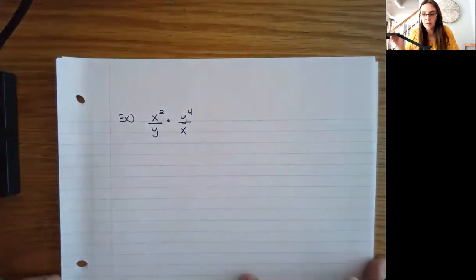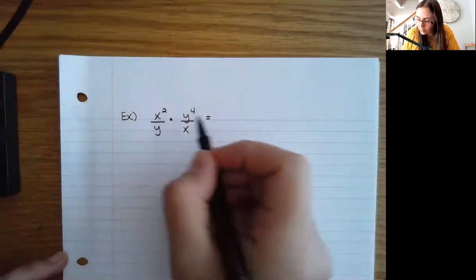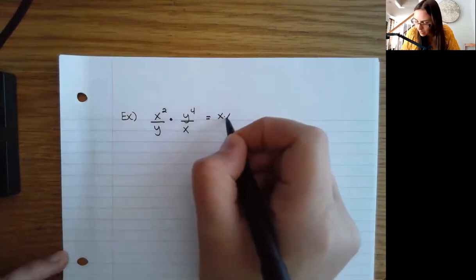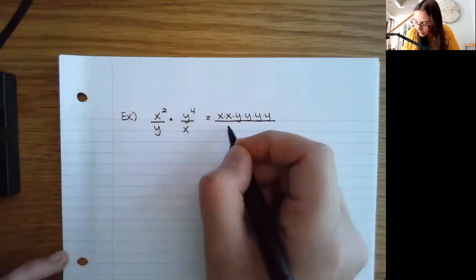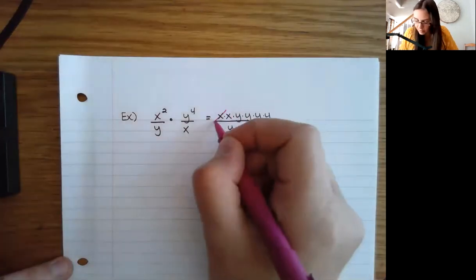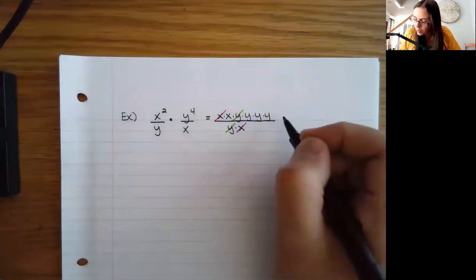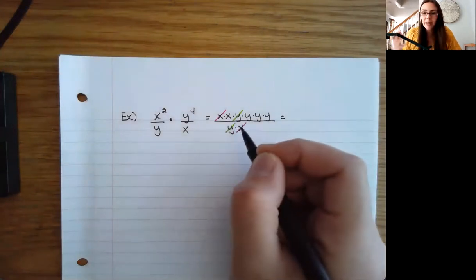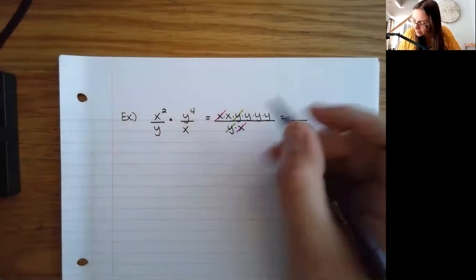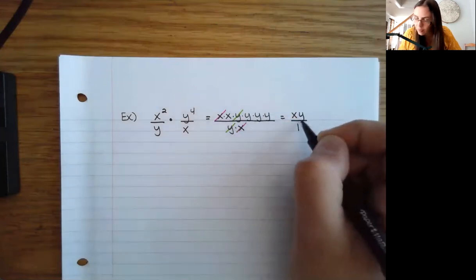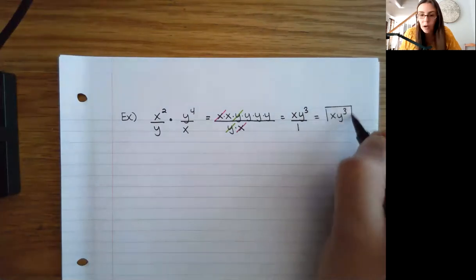Here I'm mixing in some variables and I don't have any numbers — just x and y. I'll rewrite this and multiply straight across. So I have two x's and four y's in the numerator, and then a y and an x on the bottom. I can cancel: I have a pair of x's in common and a pair of y's in common. My whole denominator cancels out, leaving a 1 there. The numerator has x and three y's, so y to the third. Dividing by 1 doesn't change the problem, so I can write this as xy³.